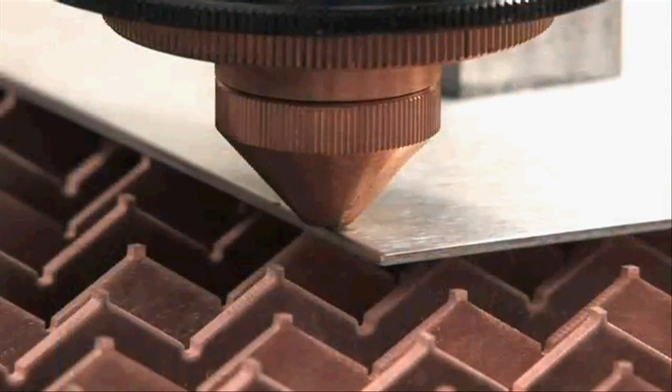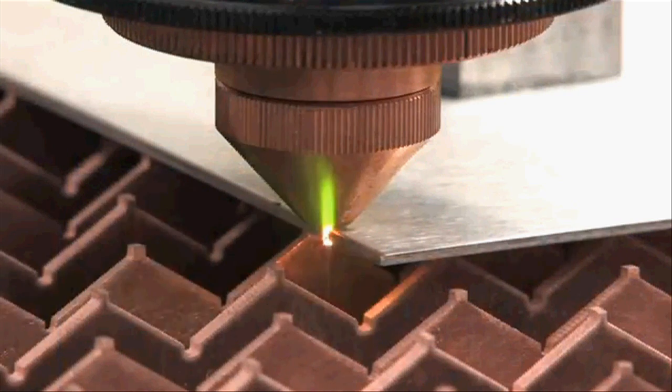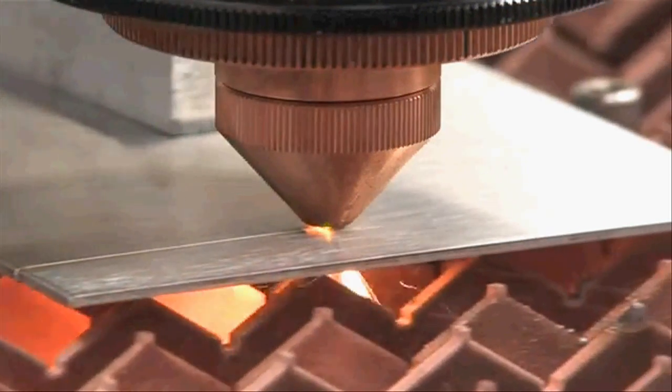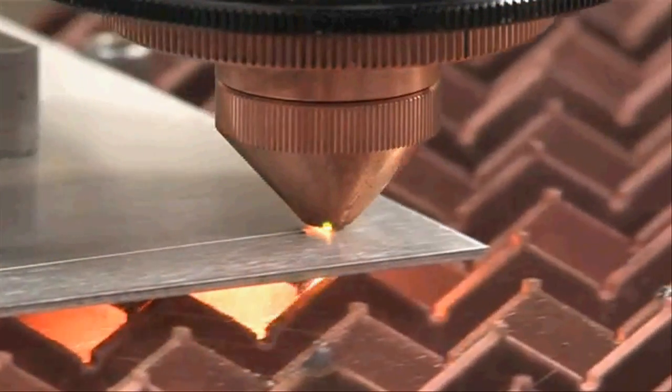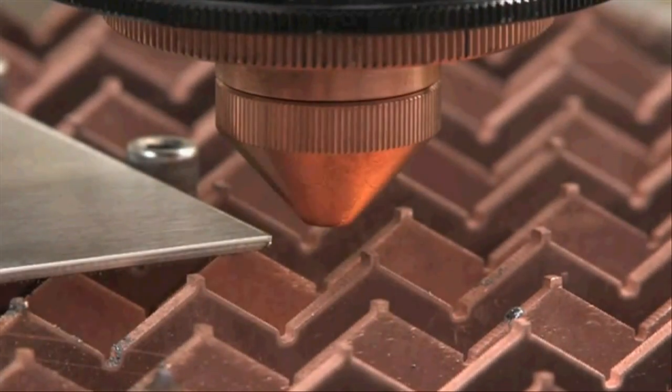This example shows nitrogen assisted cutting of 1/16 inch thick 304 stainless steel at 900 watts out of the fiber and a beam parameter product of 18 millimeter milliradians. The feed rate is 54 inches per minute. Note the smooth edge quality which indicates full penetration of the laser beam through the cut.